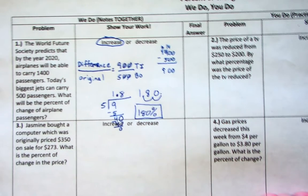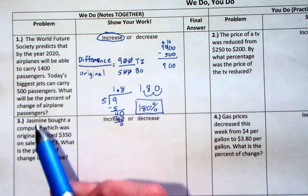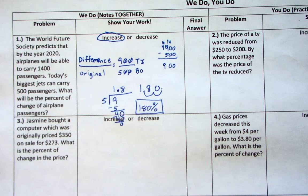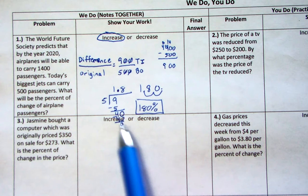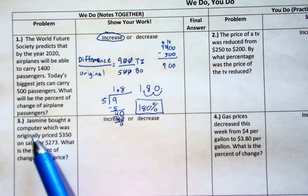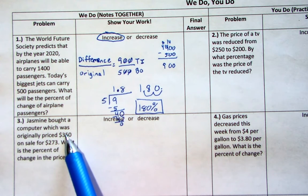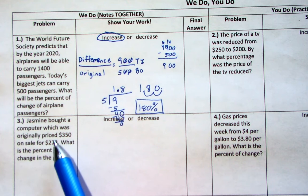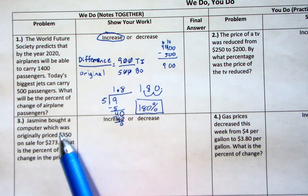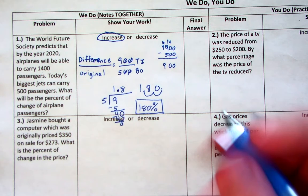Let's try another one — number three. Jasmine bought a computer which was originally priced at $350 and it's now on sale for $273. What is the percent of change? So the first step: let's see if it's an increase or a decrease. Originally it cost $350. After the sale it went down to $273. To go from 350 to 273 — was that an increase or a decrease? You went down, so that's a decrease.